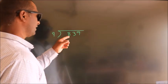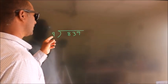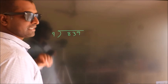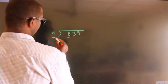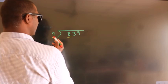How to divide 839 by 9? See, here we have 8, here 9. 8 is smaller than 9.